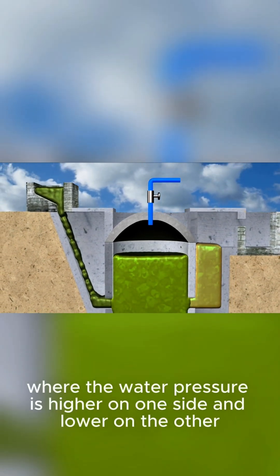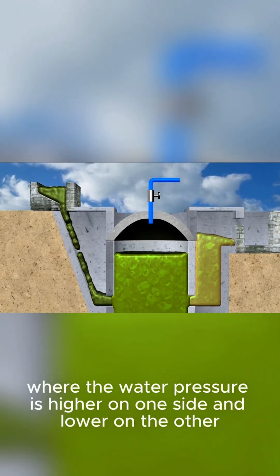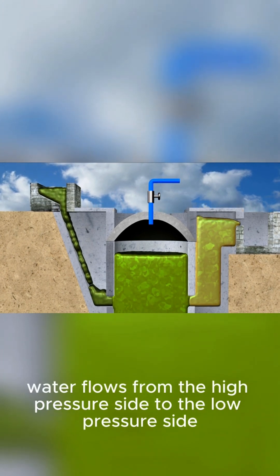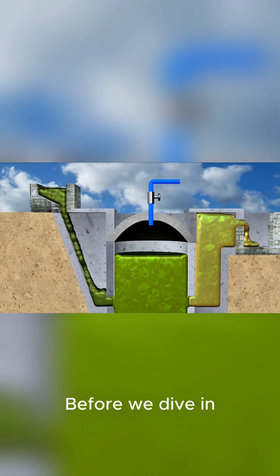like a water pipe where the water pressure is higher on one side and lower on the other. Because of that pressure difference, water flows from the high pressure side to the low pressure side.